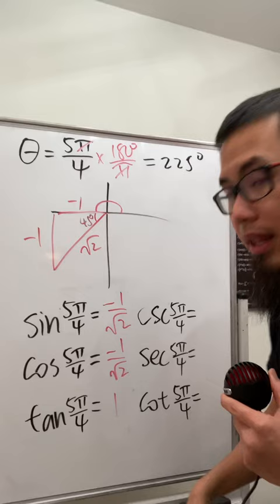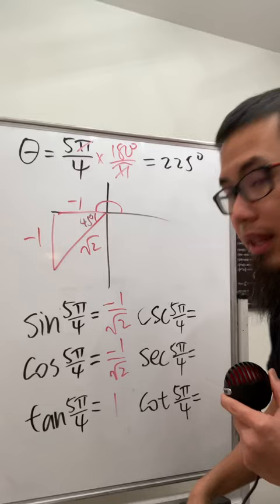And then all these guys are just the reciprocal of them, so we just get square root of 2, but over negative 1 is negative. Likewise, this is the same thing. And then 1 over 1 is still just 1, and we are done.